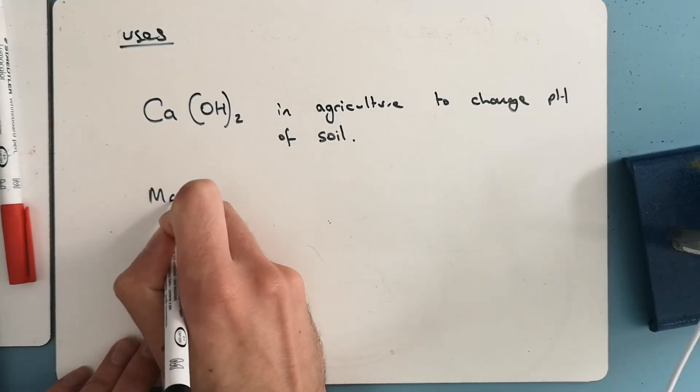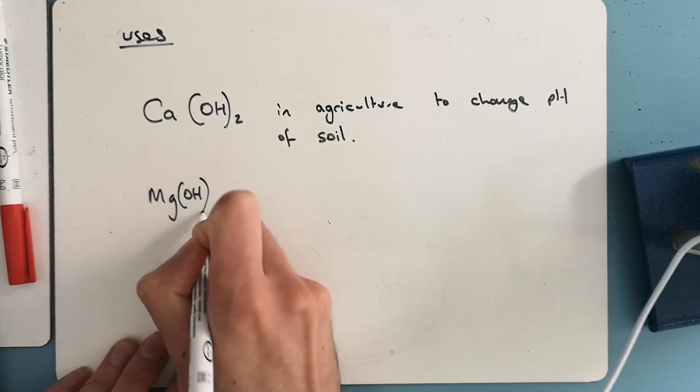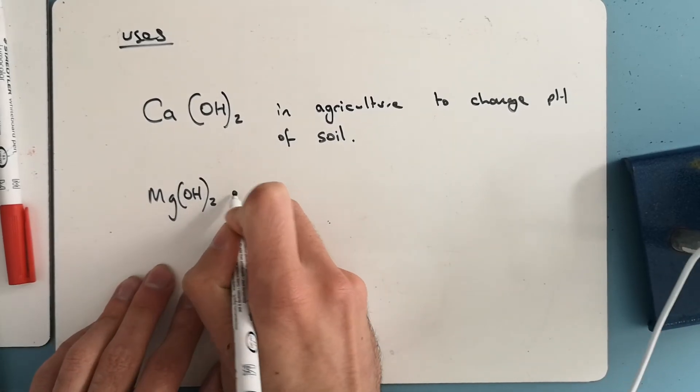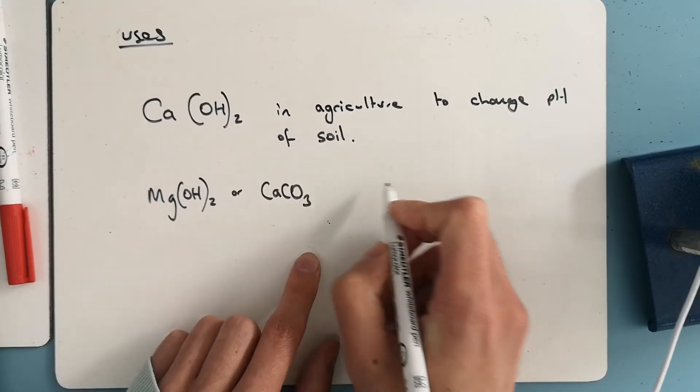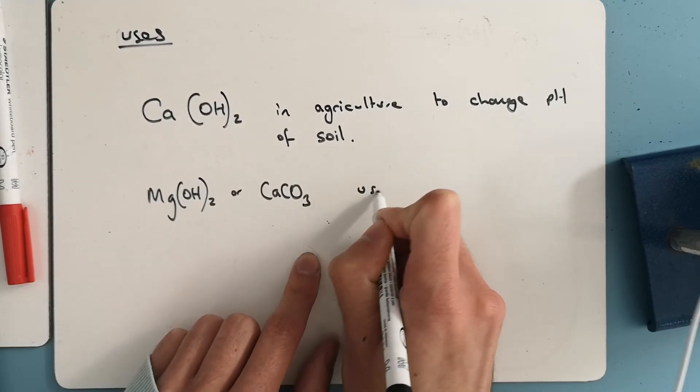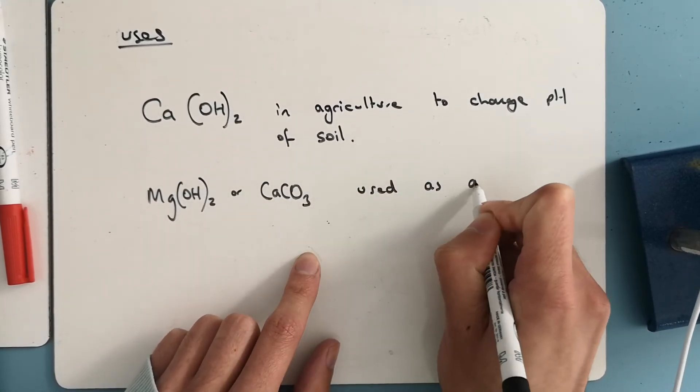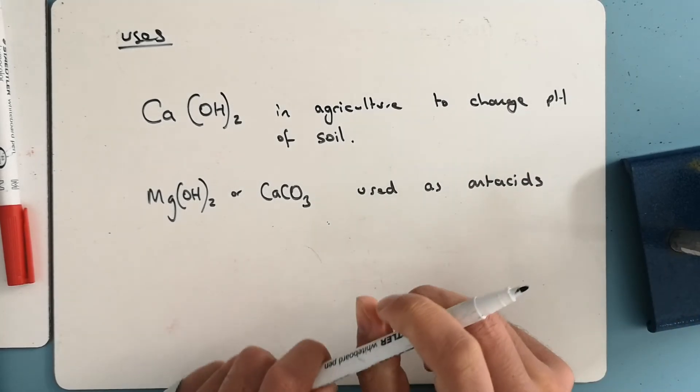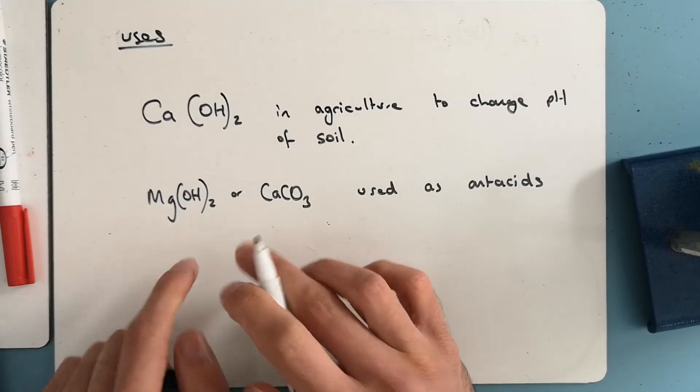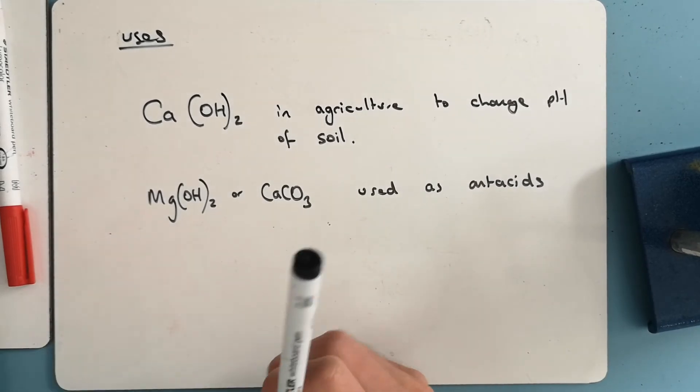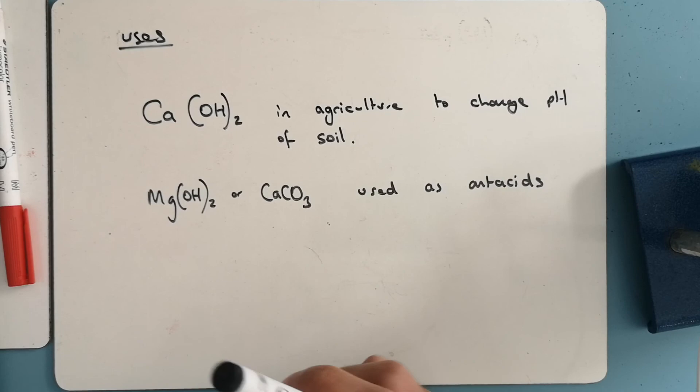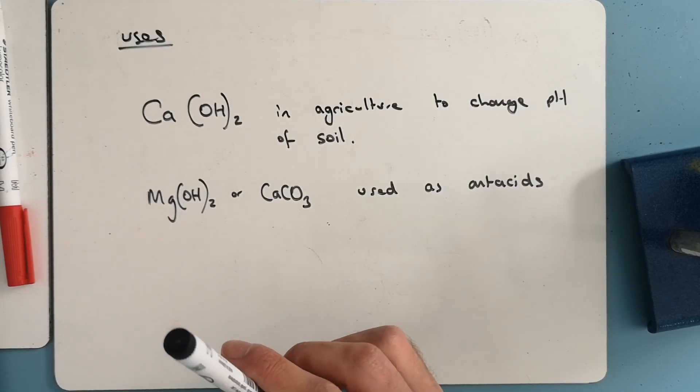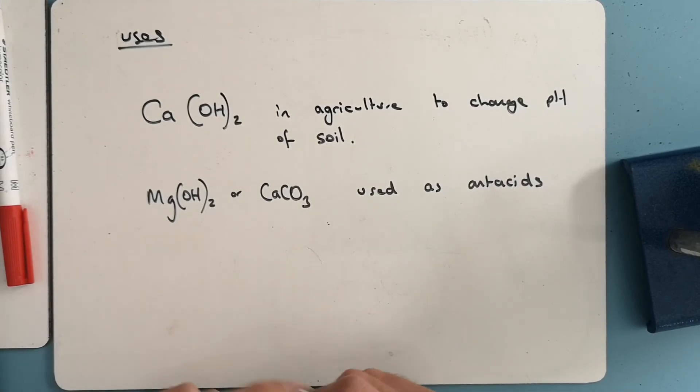And magnesium hydroxide, or calcium carbonate, are used as antacids. So if you have particularly high acidity in your stomach, we can add these in tablet form. There's lots of different versions. And they lower the acidity in your stomach and stop any problems you might have. So that's a quick run through of group two.